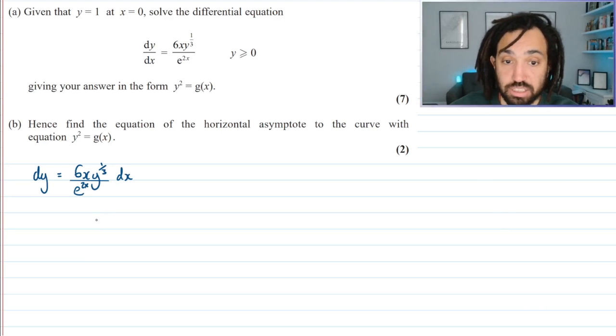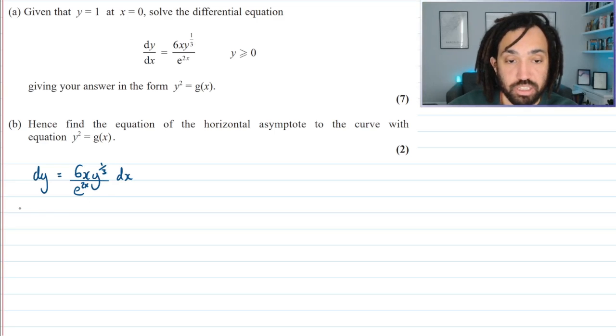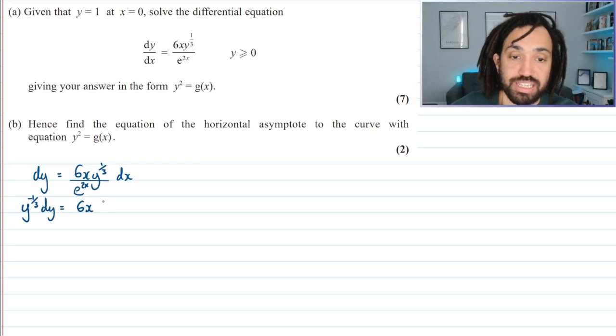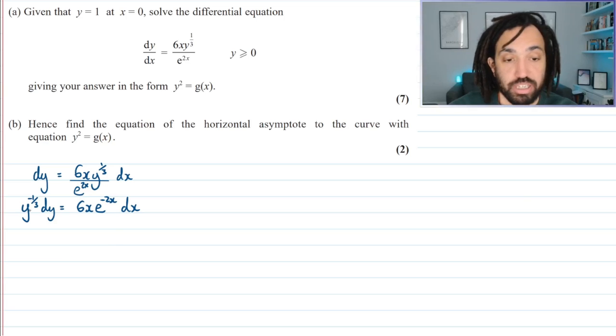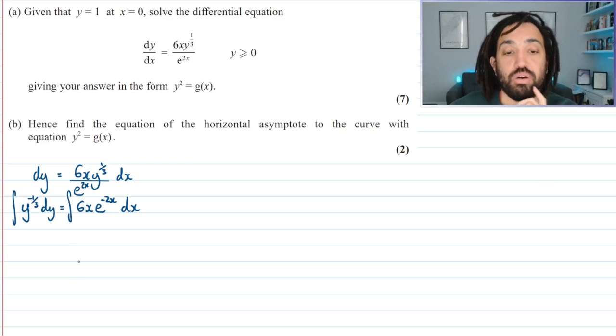Now the right hand side is where I want all my x's, and the left hand side is where I want all my y's. So I'm going to divide by y to the power of 1 third, which is the same as multiplying by y to the power of minus 1 third. And on this side I'm going to bring the e to the 2x up, so it becomes a negative power, and I've still got the dx there. What that allows me to do is now I can integrate both sides of this equation.